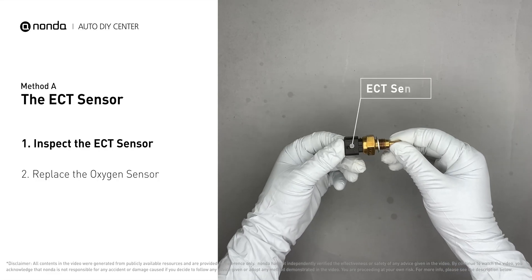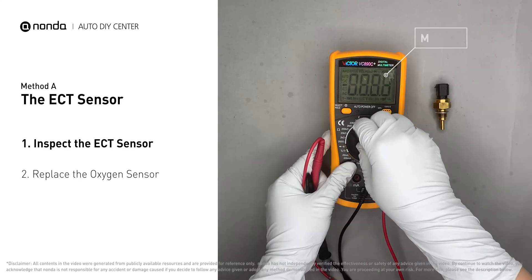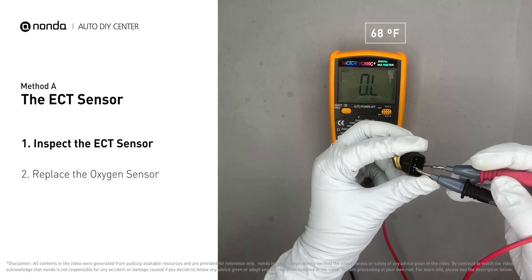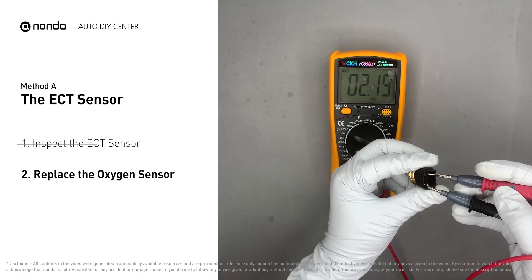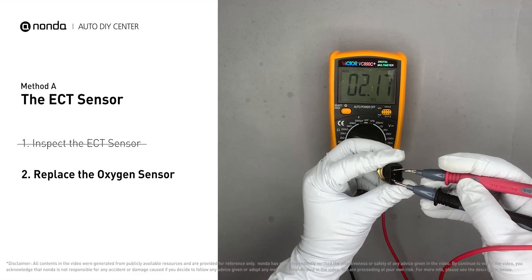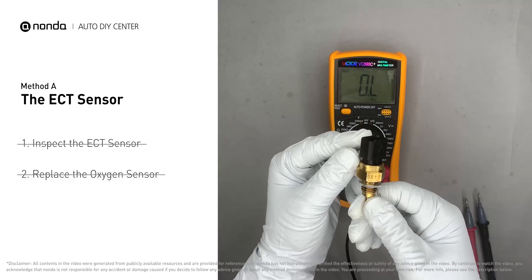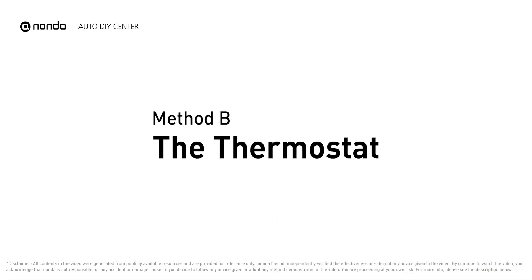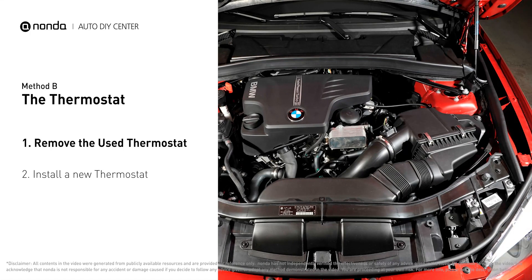Remove the ECT sensor from the engine and use a multimeter to test it. At an ambient temperature of 68 degrees Fahrenheit, the sensor resistance should be between 2000 ohms and 3000 ohms. If you do not get a reading in that range, the ECT sensor is faulty and needs to be replaced. If the ECT sensor has a correct reading, proceed with Method B.